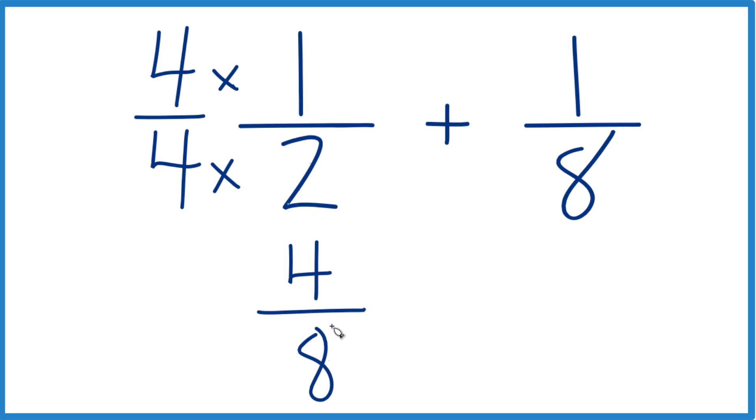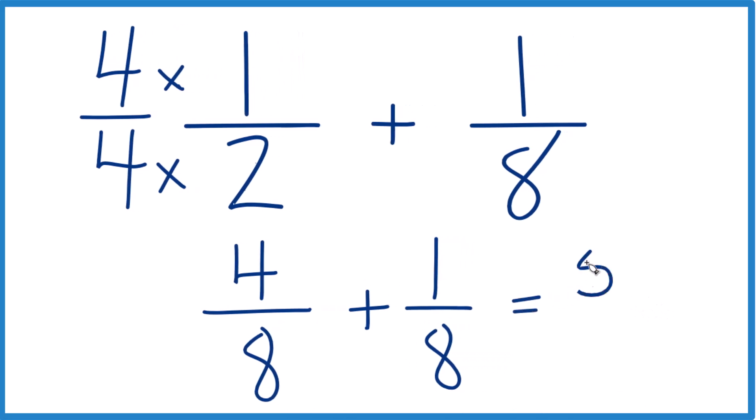We can take our four eighths plus our one eighth. And since the denominators are the same, we're just going to add those numerators together. Four plus one equals five.